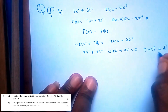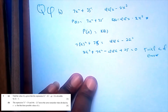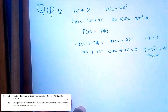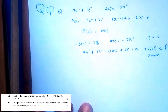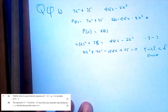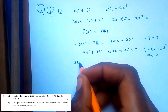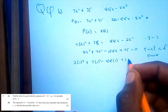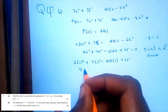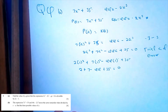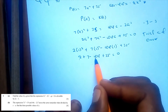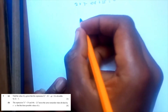We use trial and error, plugging in values between negative 3 and 3 to find which gives zero. Trying a equals 1: 2(1) plus 7(1) minus 44(1) plus 35 equals 2 plus 7 minus 44 plus 35, which equals zero. So a equals 1 is our first value, meaning (a minus 1) is a factor.